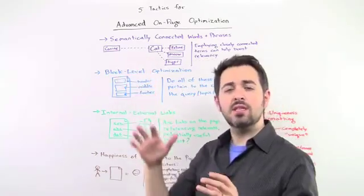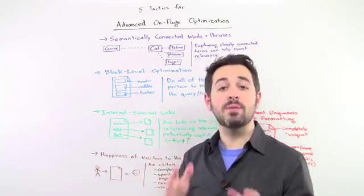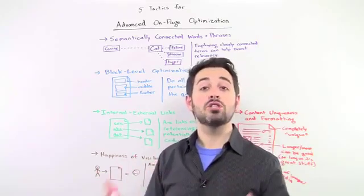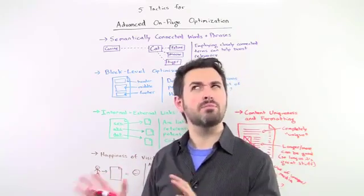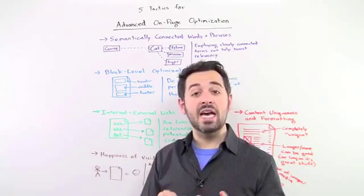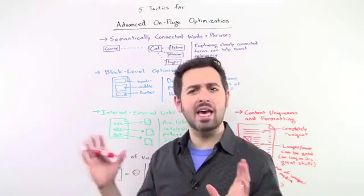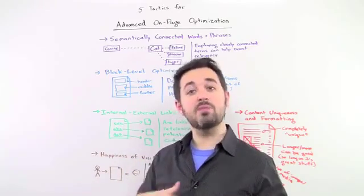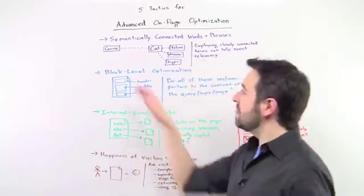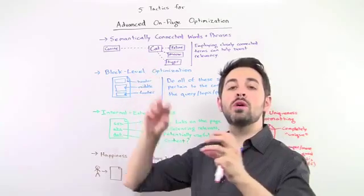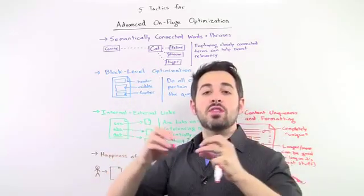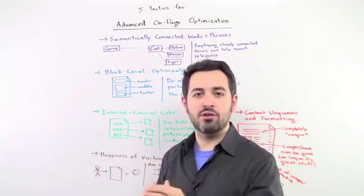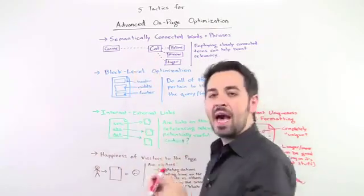First one, starting out, is this idea of semantic connectivity. We've talked about this in the past. We did some research a couple of years ago, maybe 18 months ago, on LDA, which is latent Dirichlet allocation, which of course is a form of topic modeling that we suspected Google might be using. It's a way to imagine the connections between words in a particular language. I'll give you an example. Here's the word cat.